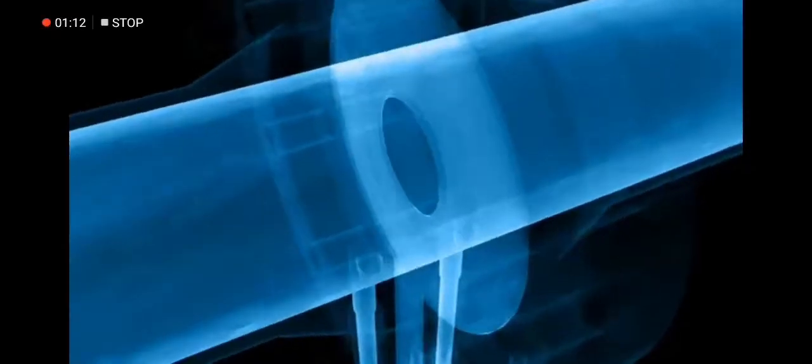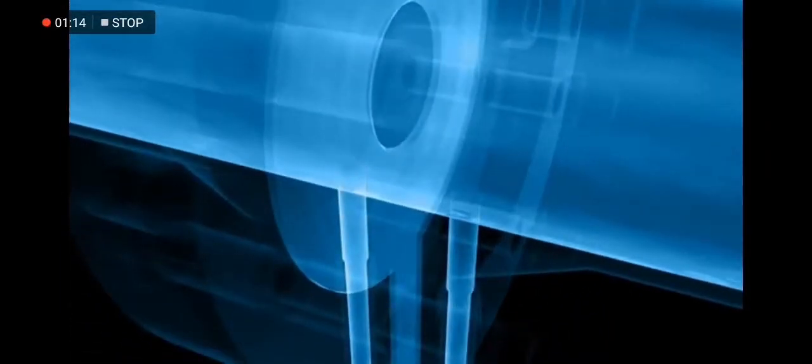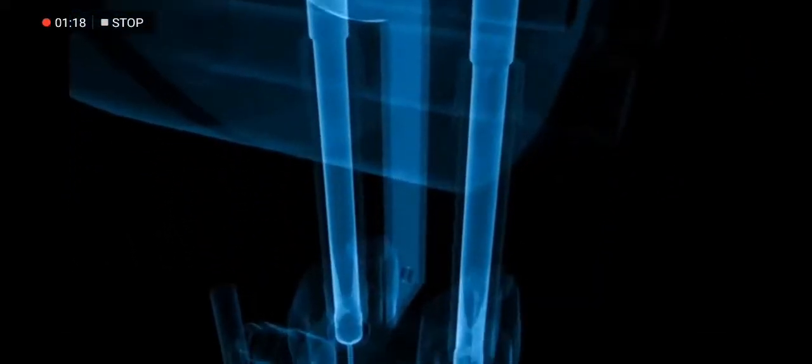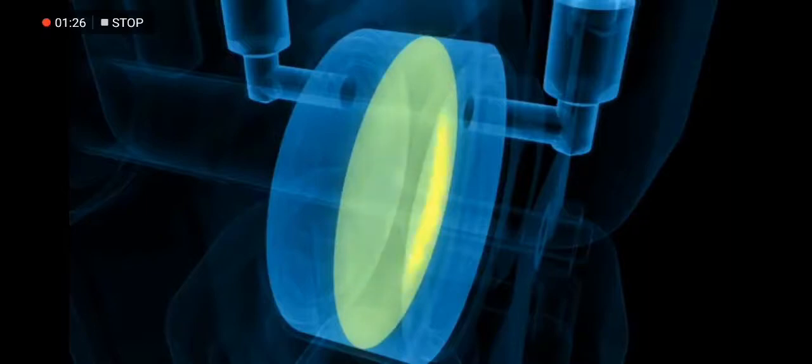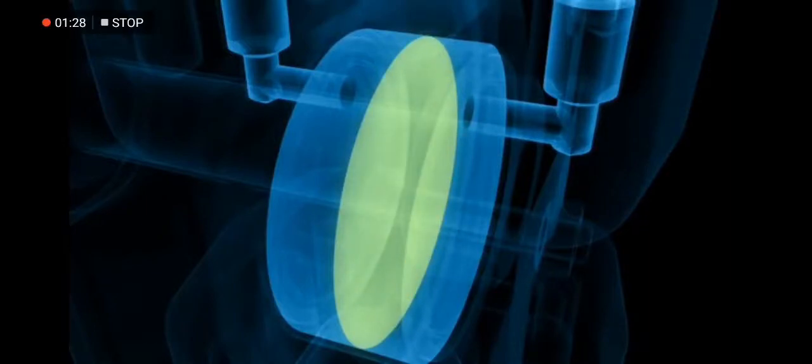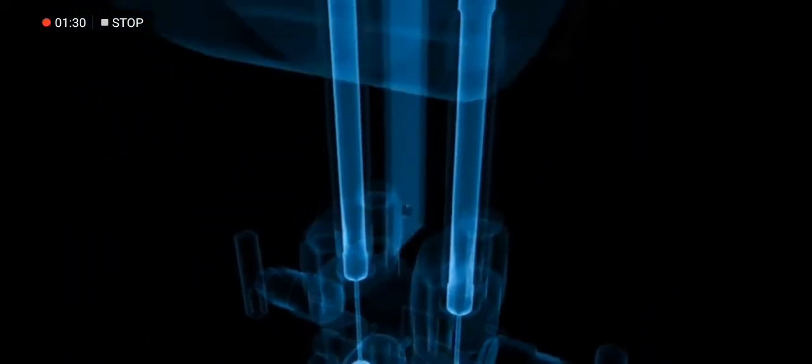Two holes are located in the pipe wall, one before and one after the orifice plate. Two separate tubes connect these holes to a differential pressure sensor, with its two pressure chambers separated by a diaphragm. The tiniest pressure differences in the flowing fluid can be precisely measured.